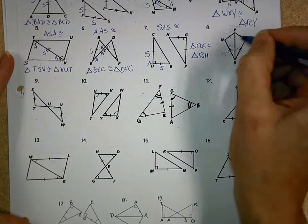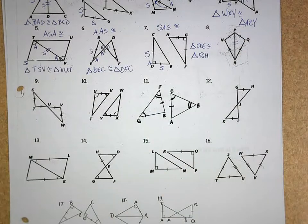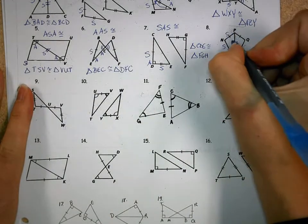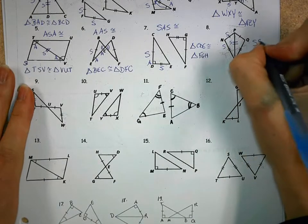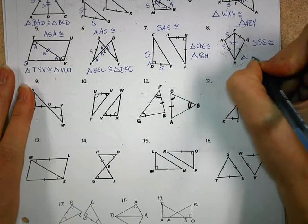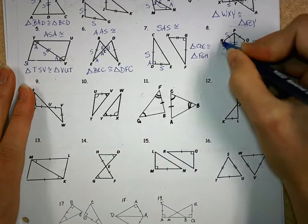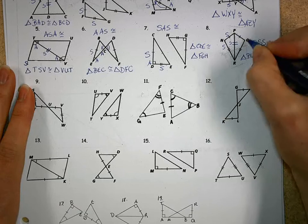So let's look at number 8. On number 8, we share a pair of sides because of the reflexive property, so that means I have the side-side-side congruence is being used, so I have triangle PNR is congruent to triangle, if I go PNR, I got a matchy-matchy PQR.